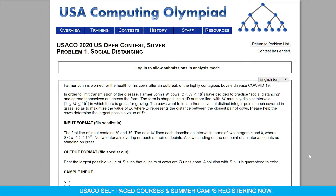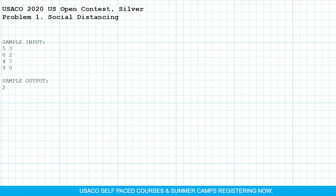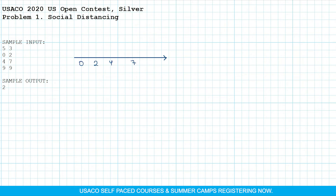In this video we are going to solve the Social Distancing problem from USACO US Open 2020 Silver. There is a horizontal line and there are M intervals on this line with grass — for example, from 0 to 2, and 4 to 7, and 9. We also have N cows (5 in this example), and we want to place them on these intervals and maximize the minimum distance between them.